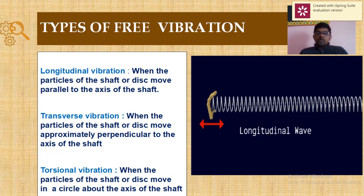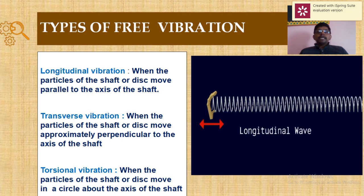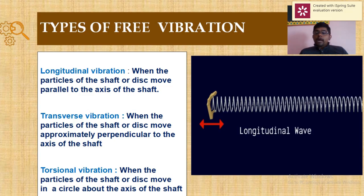Types of free vibration can be classified into three types: number one is longitudinal, number two is transverse, and number three is torsional. Longitudinal vibration takes place in the same axis as the applied force — parallel to the axis. Transverse vibration takes place perpendicular to the axis. Torsional vibration occurs due to high-speed rotation.